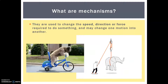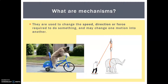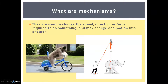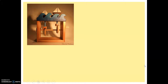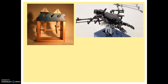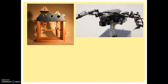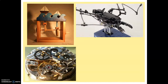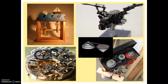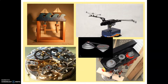Mechanisms are used to change the speed, direction or force required to do something, and may change one motion into another. We have this clever dog managing to turn the pedals on a bike, causing the wheels to turn. And this man is utilising a pulley to lift a very heavy weight. Whether you've created a simple mechanical toy, or you're looking at something complex like a bat design made out of Lego — you can see the gears and motor. Or think about the incredibly complex components inside a watch, or the functional inside of a pillar drill, which uses a system of pulleys from the motor to cause the drill bit to turn.